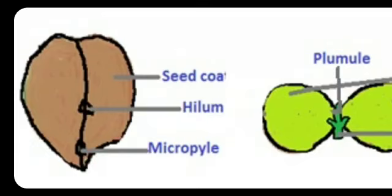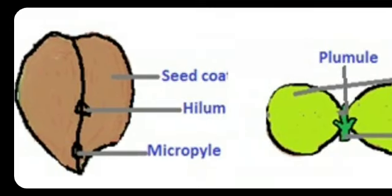When we studied the ovule, we learned about the integument — that means outer covering. That outer covering becomes the seed coat, which is very hard. The outer covering of the seed is composed of two layers: Testa and Tegmen. Tegmen is a thin inner layer, and Testa is a thick outer layer.